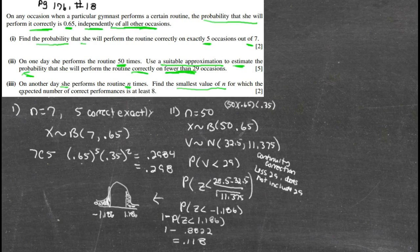All right, so part three: find the smallest value for n for which the expected number of correct performances is at least eight. All right, so first for part three, we're still dealing with the binomial situation.